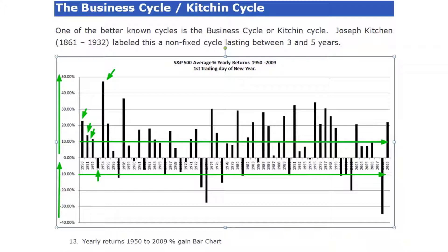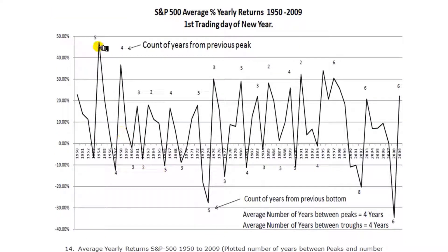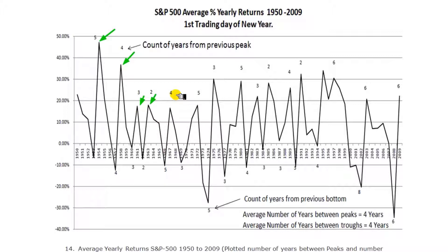So how do we apply cyclical analysis to this data? I converted this to a line chart and counted the number of years between the peak market returns. You can see here on this chart the mapping. We have from 1950 to the peak in 1953 of five years, then the next peak in 1957 of four years, then the next peak three years, as you can see here.